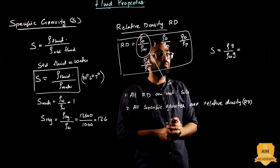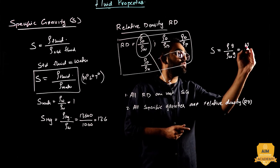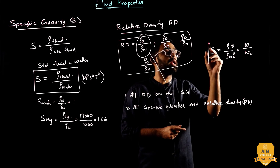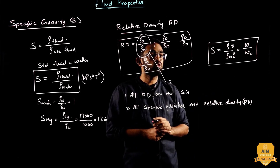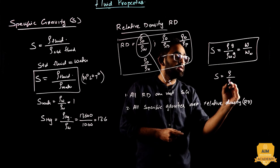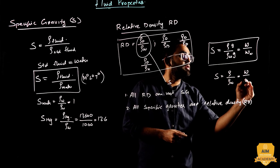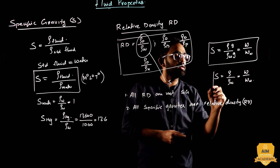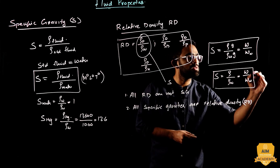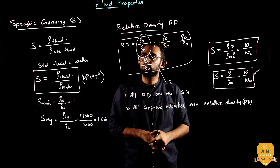Specific gravity can also be expressed as the specific weight of that particular fluid divided by the specific weight of water. So specific gravity has two equivalent definitions: density of that fluid divided by density of water, or specific weight of that fluid divided by specific weight of water.